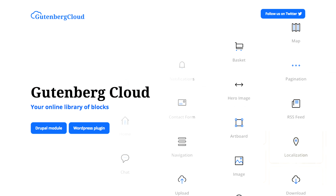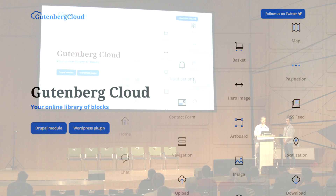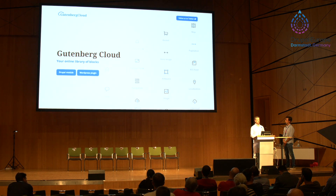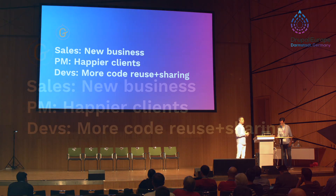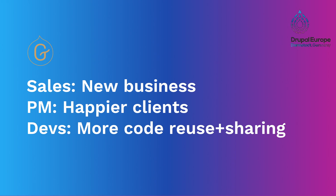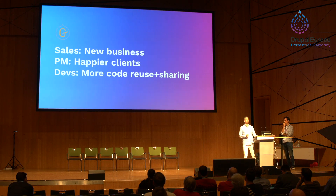We envision a growing library online with CMS-agnostic frontend blocks. They're only HTML, JavaScript, and CSS. You code it once and reuse them on multiple platforms. It's as good as it sounds, and it's launching later this year. For us at Frontcom, as a Drupal shop, Gutenberg means new business. It means happier clients, especially the marketing department. It also means better and more code reuse and sharing — all thanks to open source.